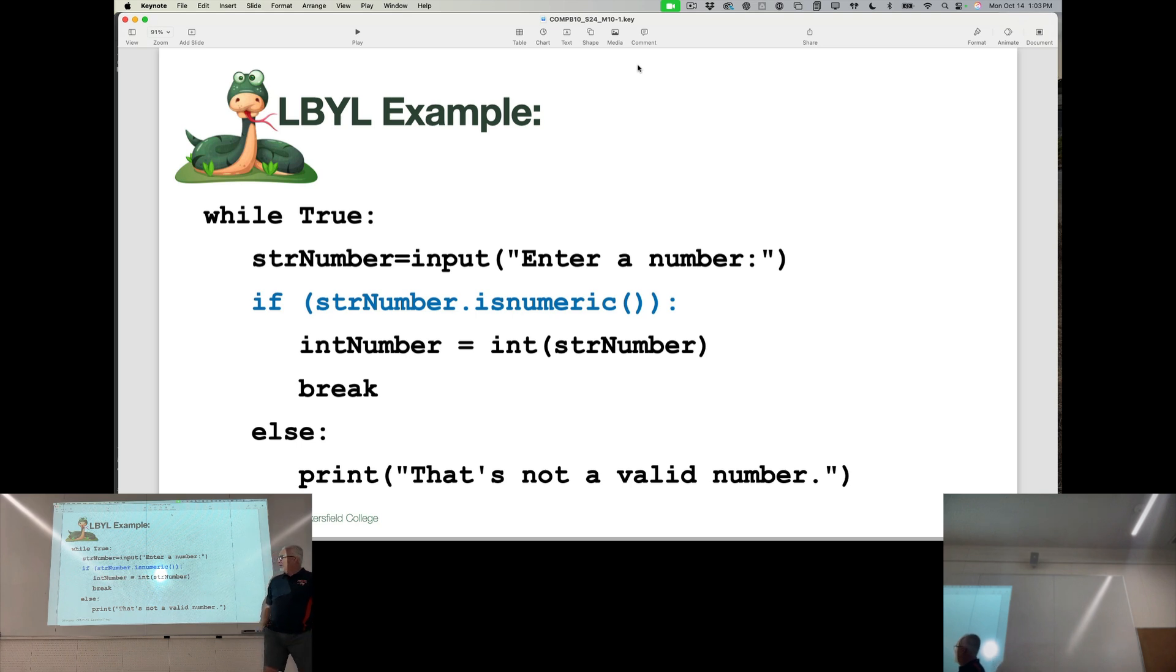And so if I'm going to look before I leap, let's say I want to just convert that number to an int. That's the operation. What do I need to make sure that is true before I try and convert that number to an int?